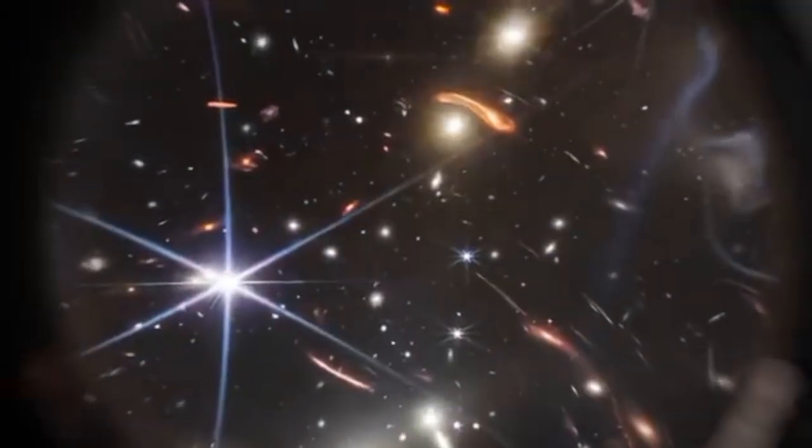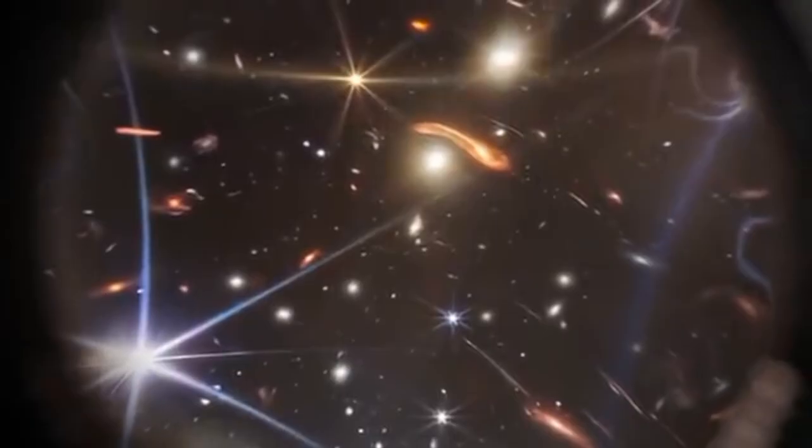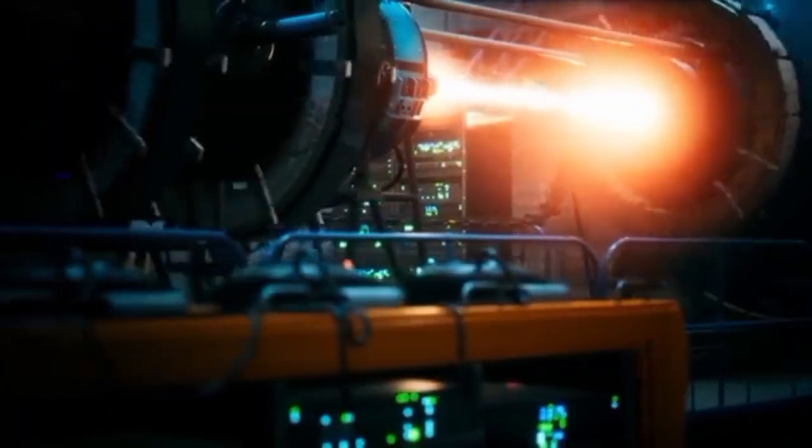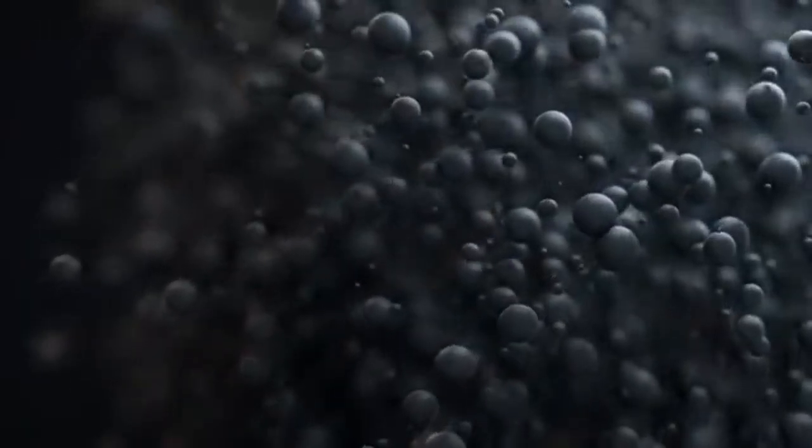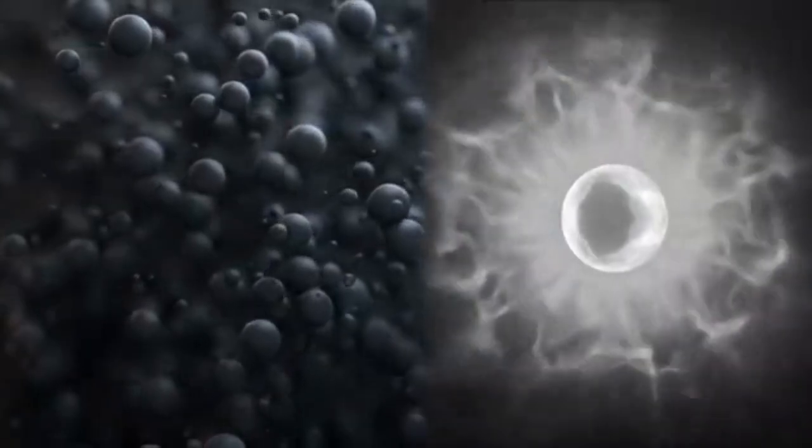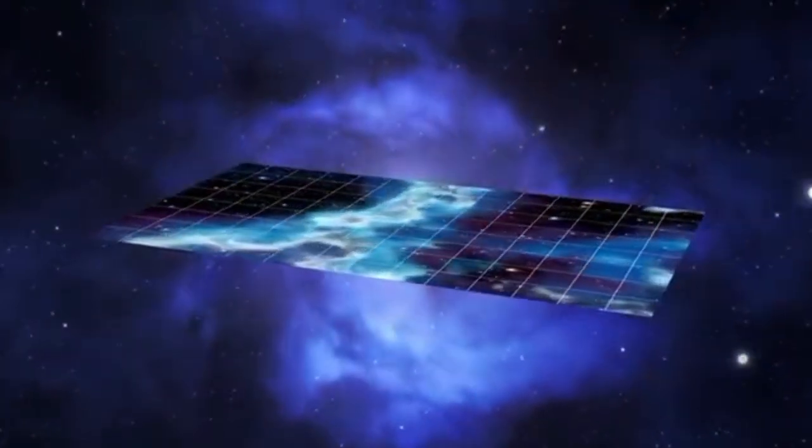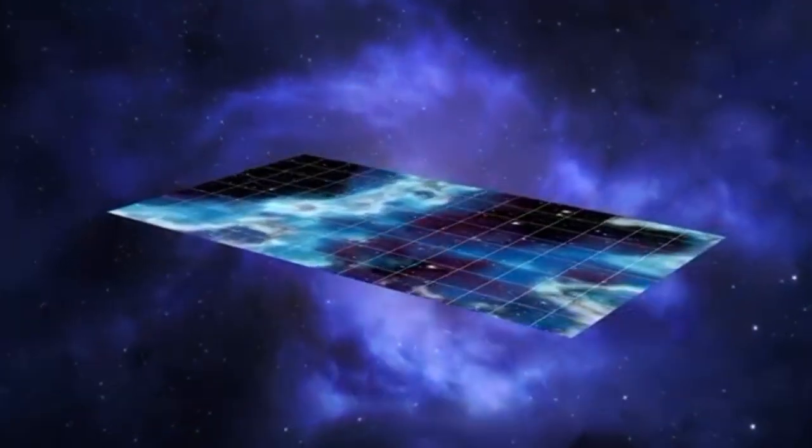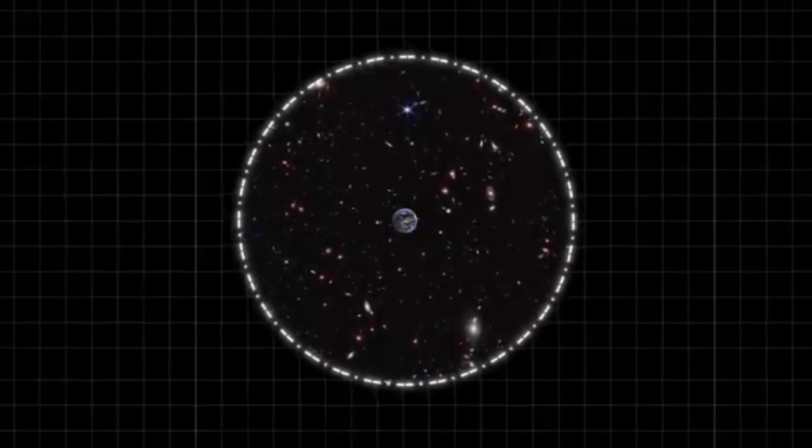Exoplanets are difficult to observe, and their detection necessitates cutting-edge technology and effective telescopes for locating them. These planets are often obscured by the glare of their host stars, making them difficult to study. But with advancements in technology, direct imaging of exoplanets is now possible with some of the largest telescopes in the world. To be imaged directly, an exoplanet must be large enough to be visible to the telescope, sufficiently distant from its host star so as not to be blinded by its light, and young enough to be bright and easily visible.